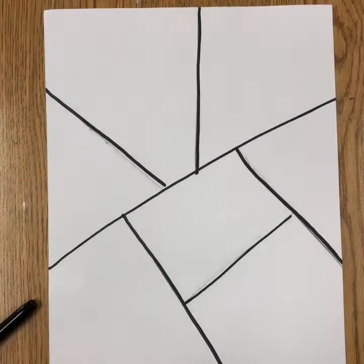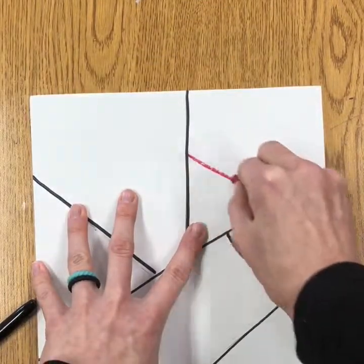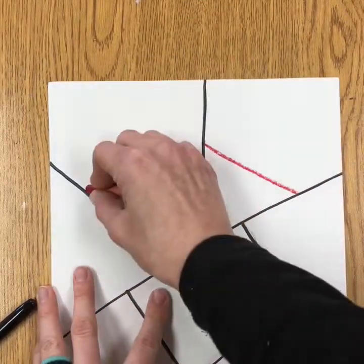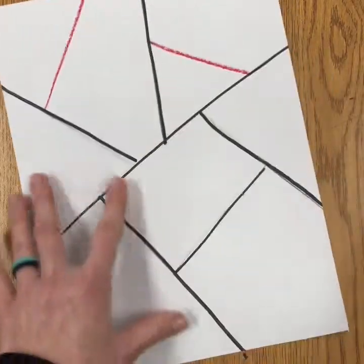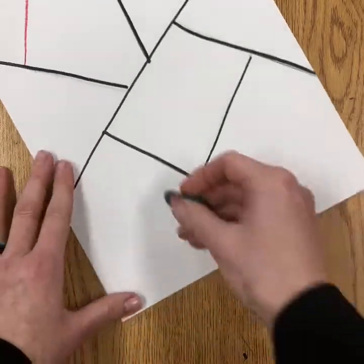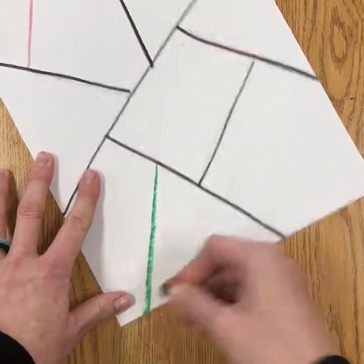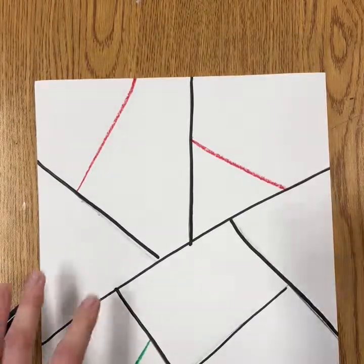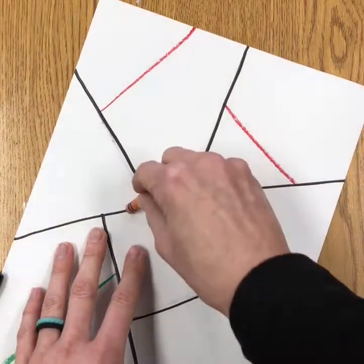Make a choice on some colors and you're gonna start by just adding some additional lines with crayon. Any color you choose is okay and after you have your extra lines you're going to start adding some color.